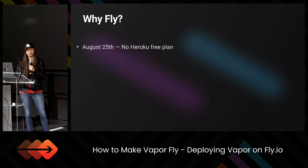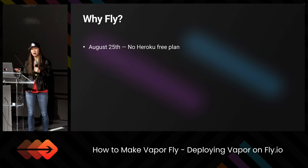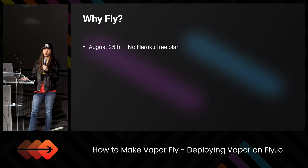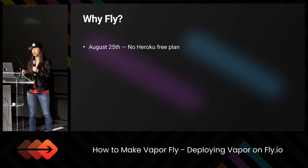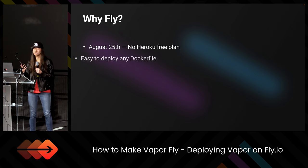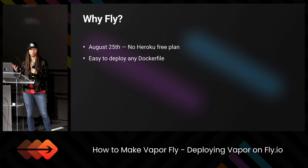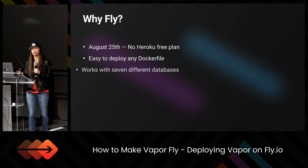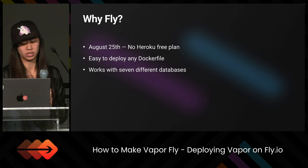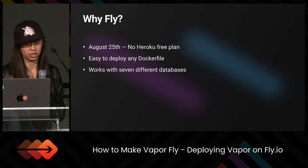Why would we use Fly.io for server-side Swift? On August 25th of this year, Heroku announced they're getting rid of their free plan. Everyone asked where they could deploy for free now — that's the first time I heard about Fly.io. After looking into it, it's really cool because you can easily deploy any Dockerfile, and with Vapor we automatically get a Dockerfile created for us. It also works with seven different databases: Postgres, MySQL, MariaDB, SQLite, and a couple others.